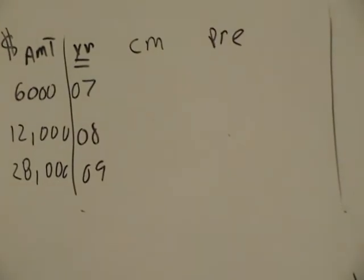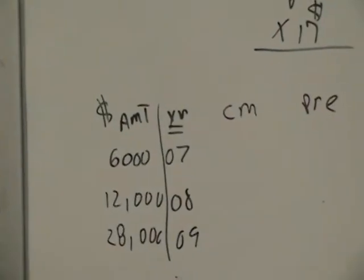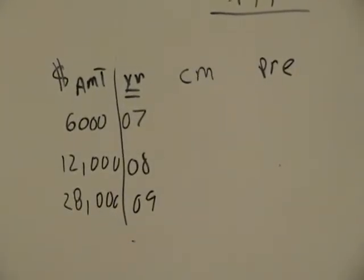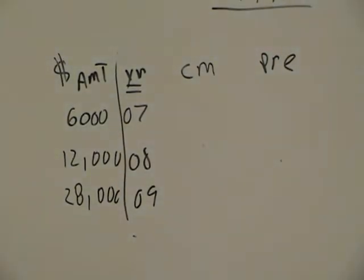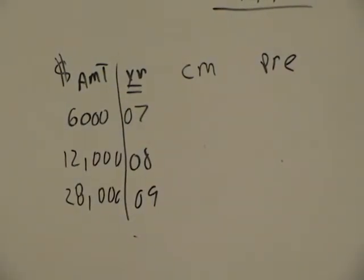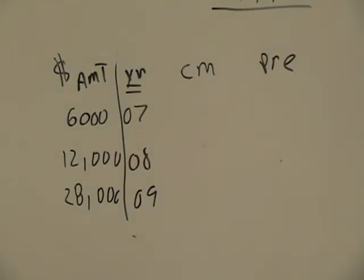So they tell us the situation. I summarize it in this table. They paid 6,000, 12,000, and 28,000. Now what do they want? Show the allocation of dividend to each class of stock, assuming the preferred stock dividend is 7% and not cumulative. Alright, not cumulative. So 7%.